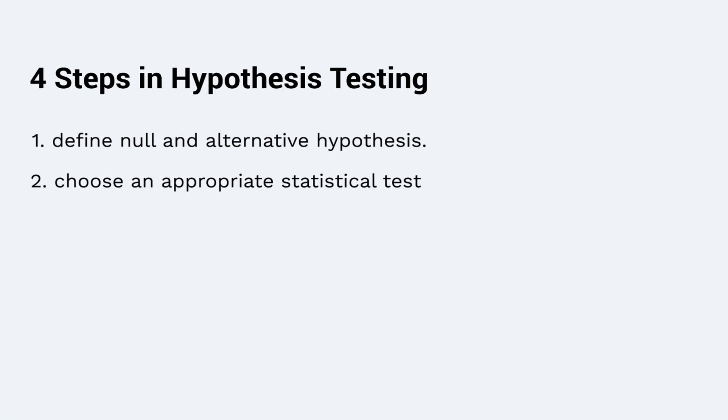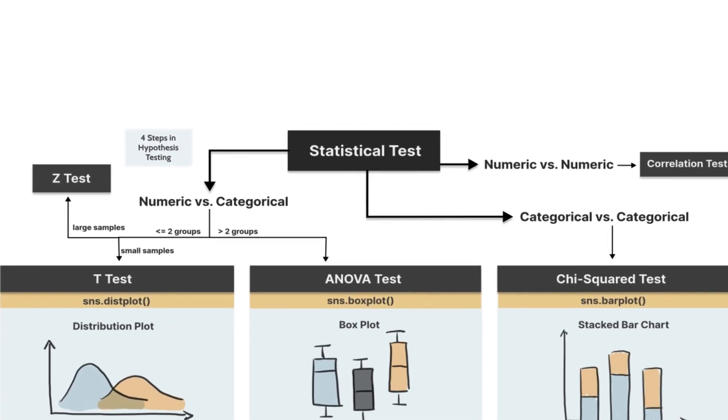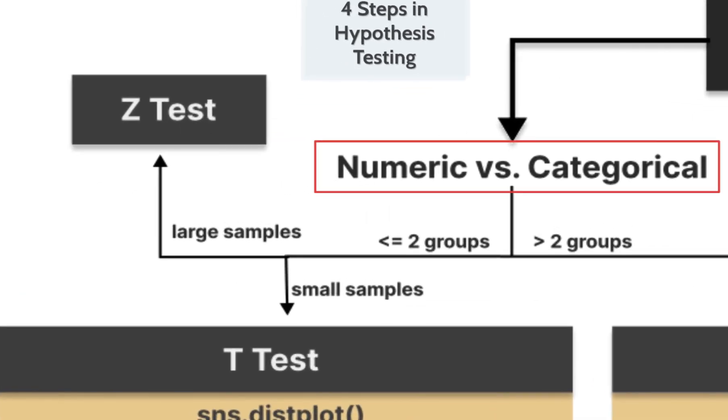The second step is to choose an appropriate statistical test. Common types of statistical testing include T-tests, Z-tests, ANOVA test, and Chi-squared test. When examining the relationship between numeric and categorical variables, we can use T-test, Chi-squared test, and ANOVA test.